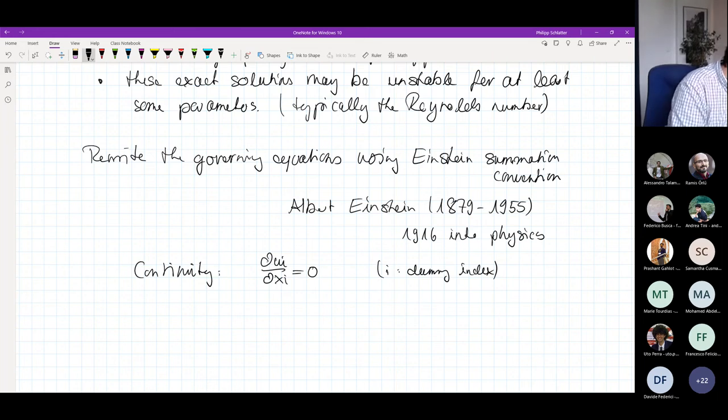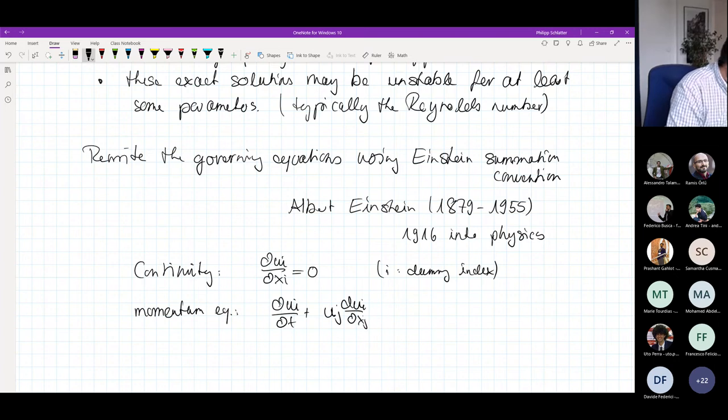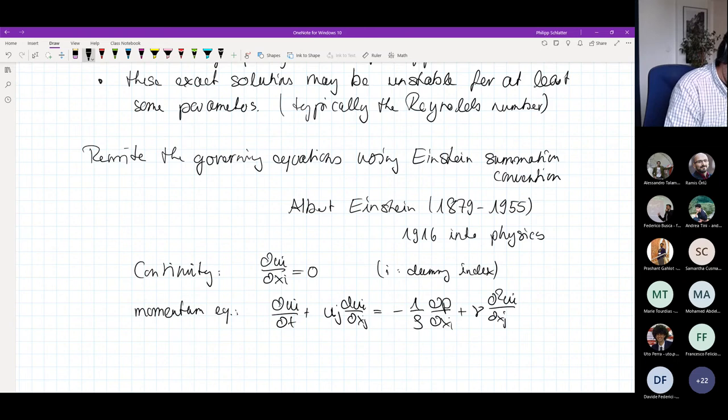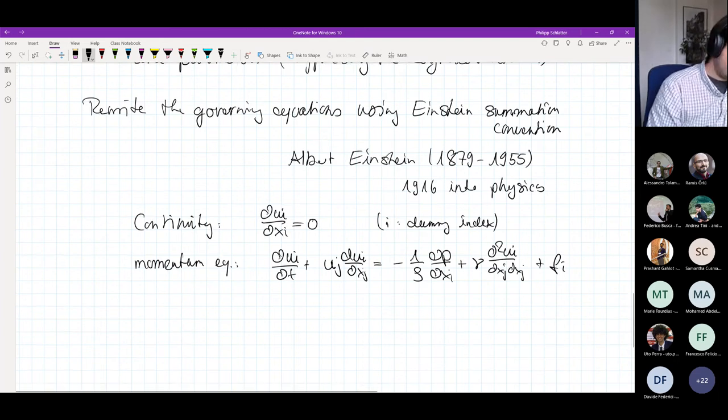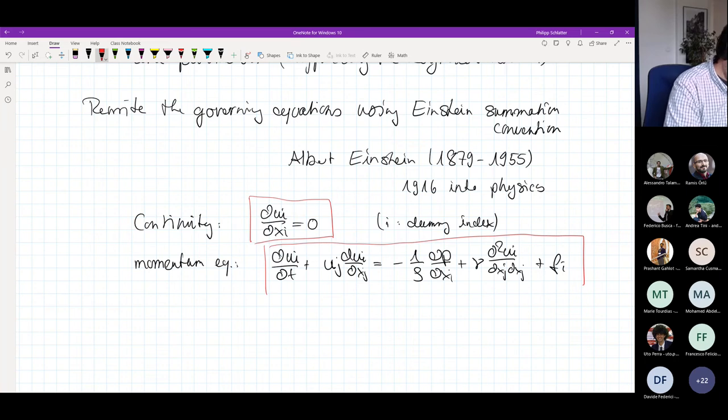The continuity equation, we have the momentum equation. In the same way, dui/dt plus uj dui/dxj equals minus 1 over rho dp/dxi plus nu times d squared ui/dxj dxj plus fi. So these are now the governing equations. Here the continuity equation, and here the momentum equation.